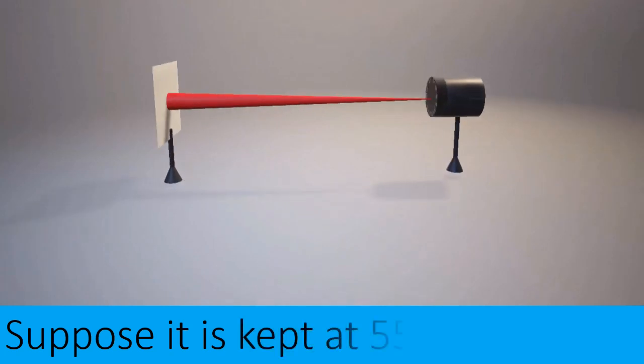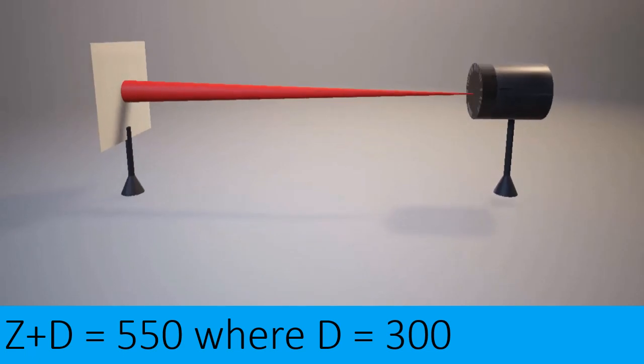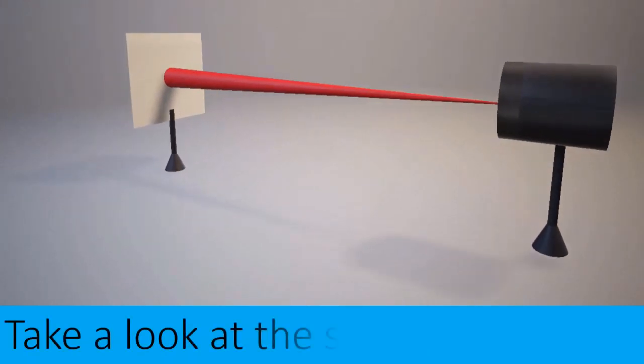Now for second reading distance is z plus d equals 550, and here d becomes 300. Take a look at the spot, it is bigger than the previous one.